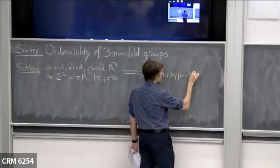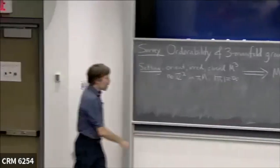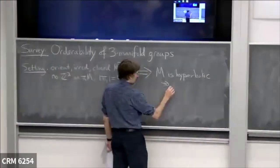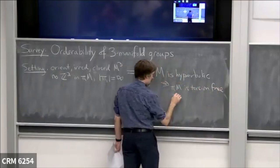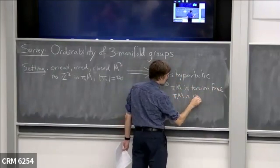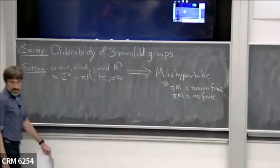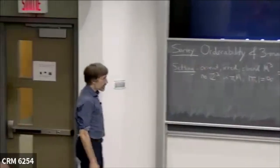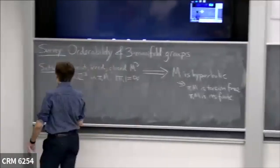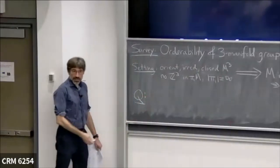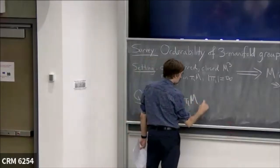So M has a Riemannian metric of constant curvature minus one, which implies many things: pi-1 of M is torsion-free, pi-1 of M is residually finite. It's really a group of two-by-two matrices, so it's a very concrete and analytic object. The question I want to address today is: when is the fundamental group of this manifold left orderable?